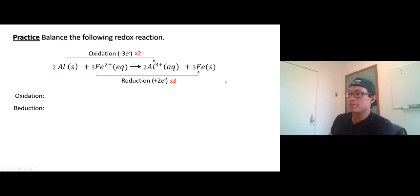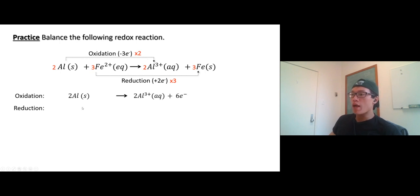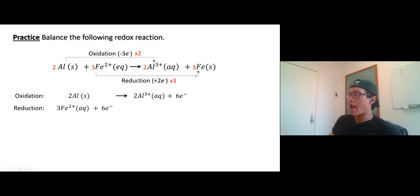So six electrons total. Oxidation reaction: two aluminum become two Al³⁺ and six electrons coming out. And now the reduction reaction: three Fe²⁺ take in six electrons and we get three moles of iron metal coming out.